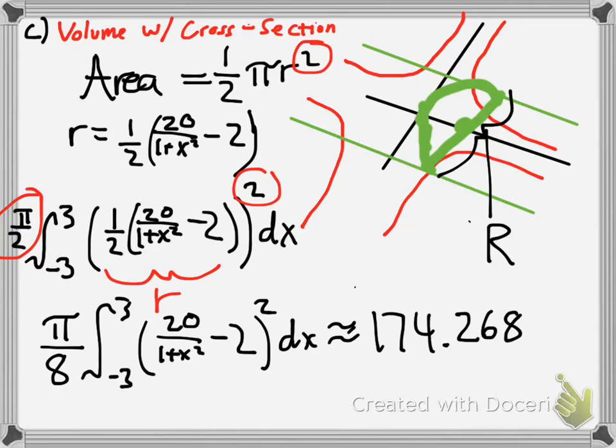And, this is the volume using cross sections, and in this case, with a semicircle. Awesome. Great job, guys.